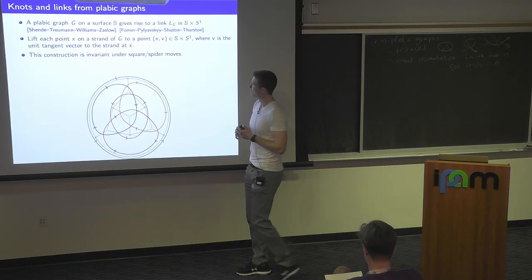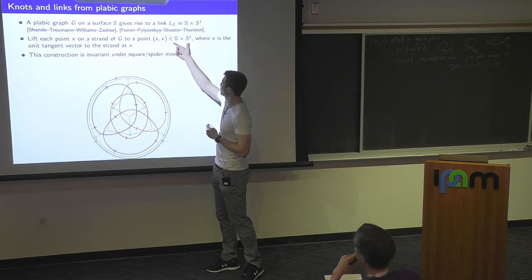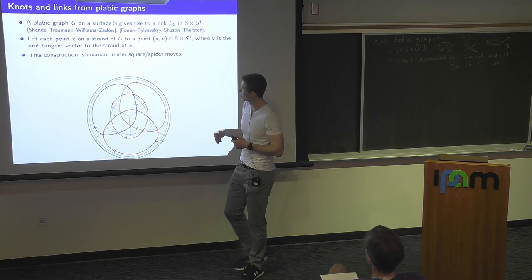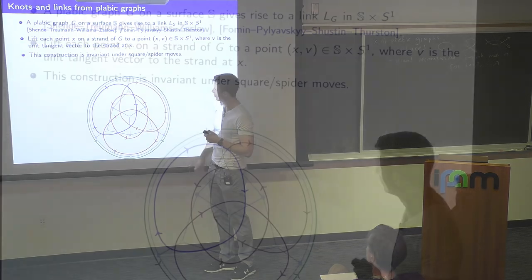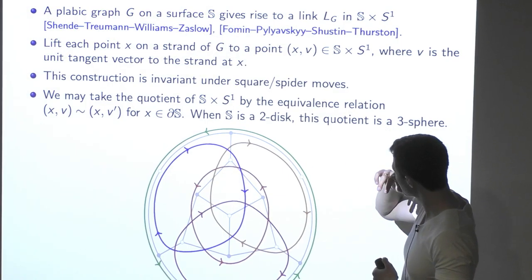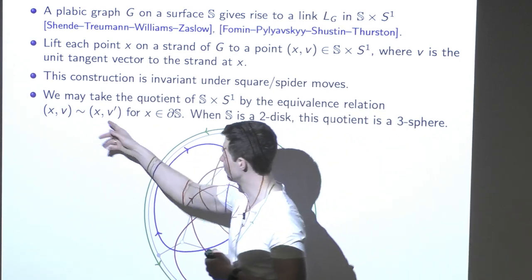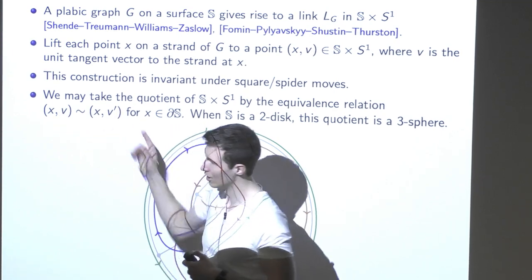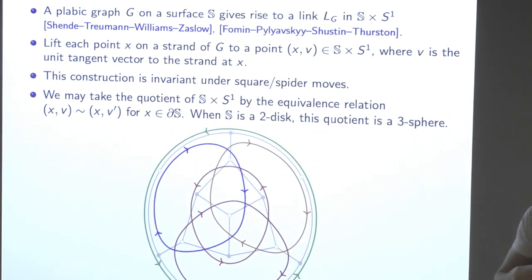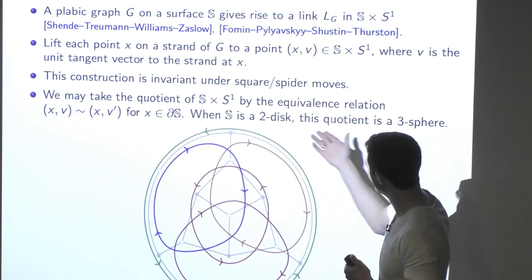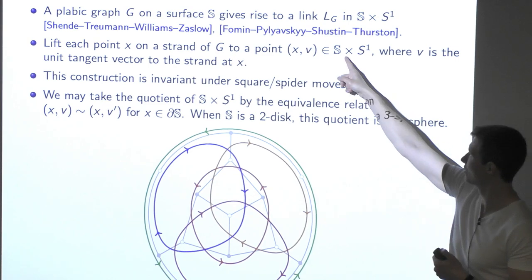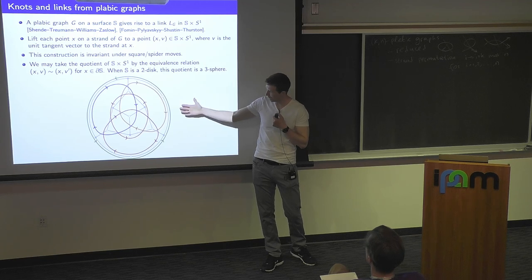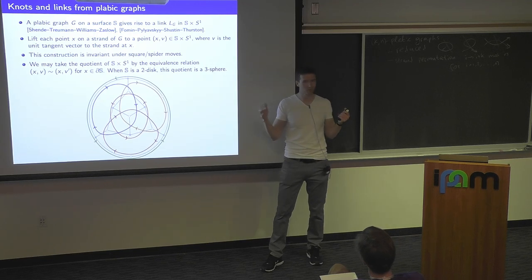One cool thing is that the link is invariant under urban renewals, square moves, or spider moves. The ambient manifold is a surface times a circle, which is a bit strange — we're used to knots in three-dimensional space. If your surface is the plane or the disk and you allow the strands to turn at the boundary without caring about the tangent vector, then instead of being a product, the manifold becomes the usual three-sphere. So for planar graphs in the plane, you get the usual knots in three-dimensional space.